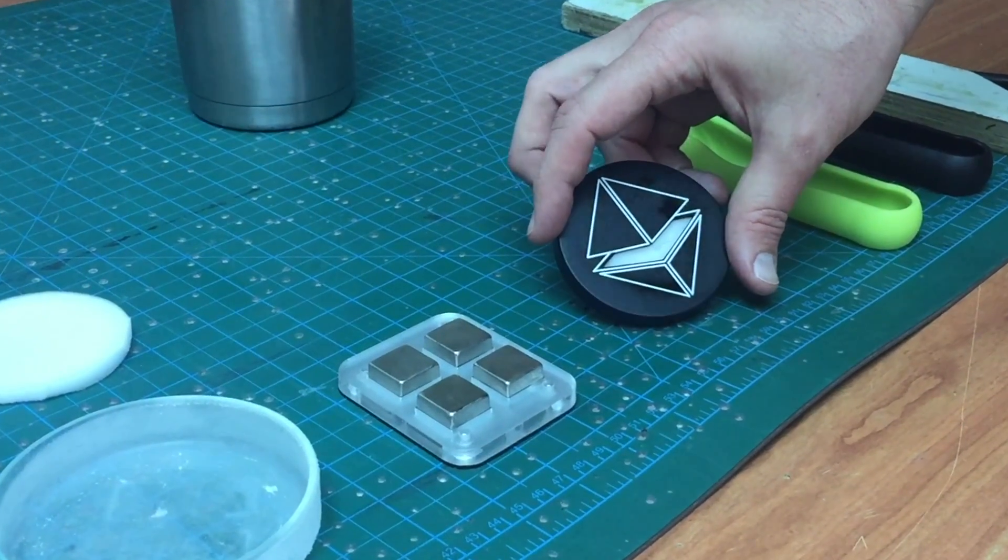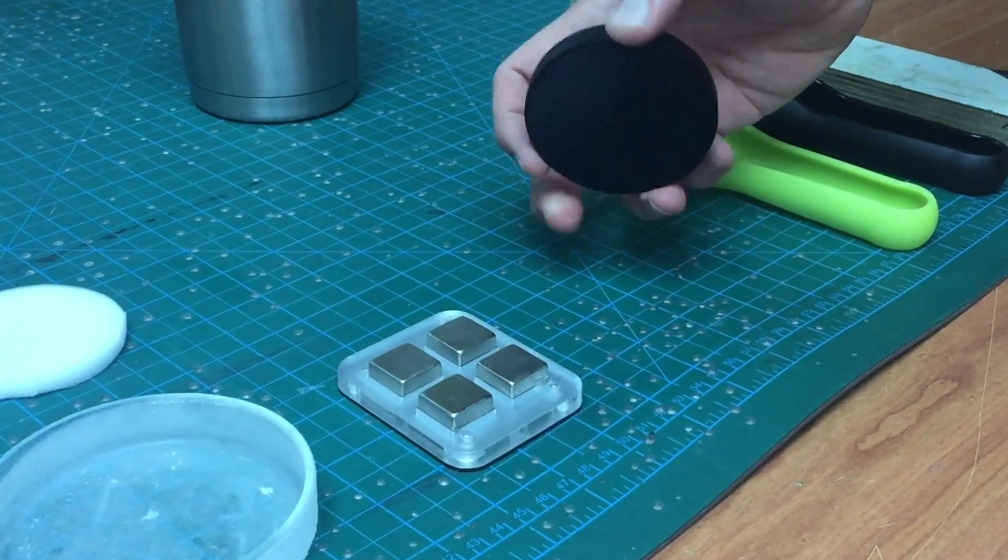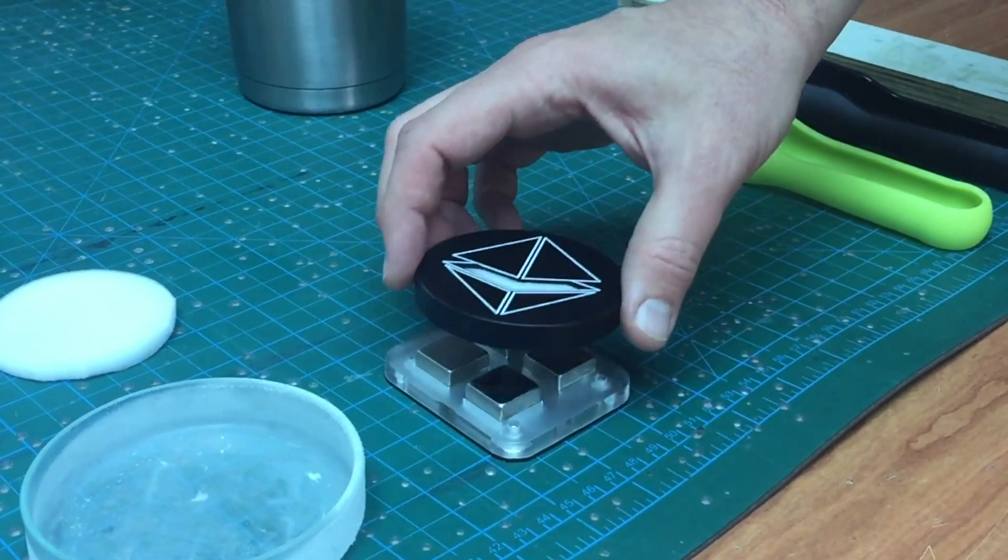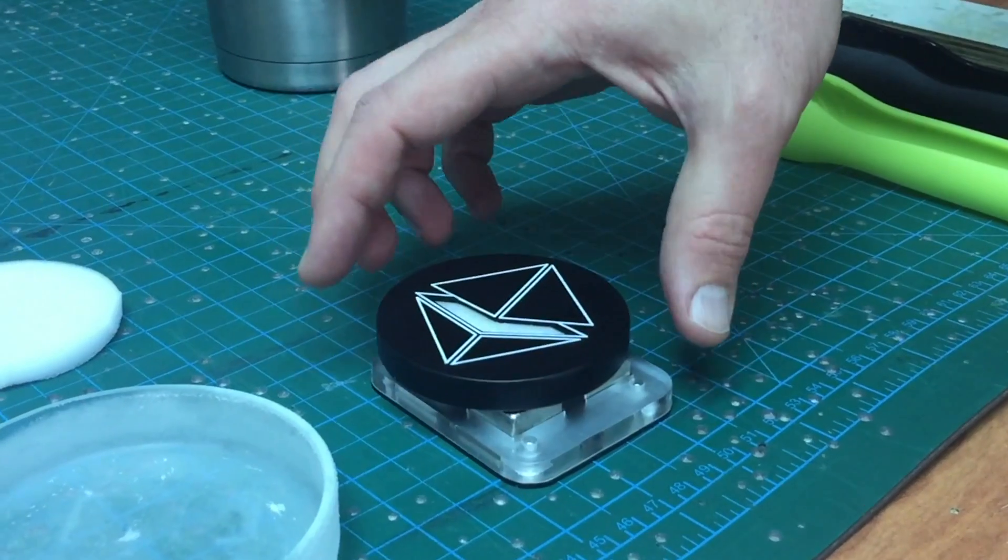So now we have a superconducting levitator at room temperature, so there's no superconductivity. You can see that there's no Meissner effect and no flux pinning.